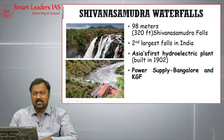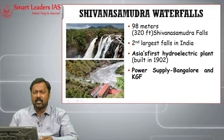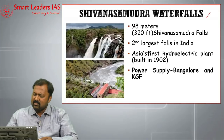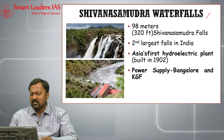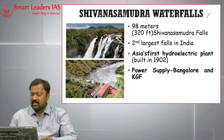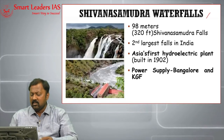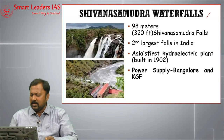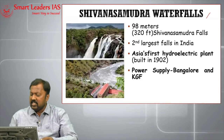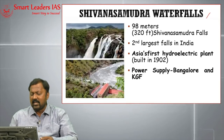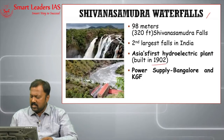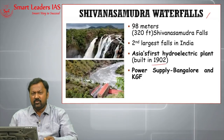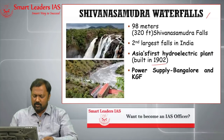An important waterfall on the Kaveri is Sivasamudra Falls — approximately 98 meters high and the second largest falls in India by volume of water. Across this falls, Asia's first hydroelectric plant was installed in 1902, which supplied power to Bangalore and KGF (Kolar Gold Fields).